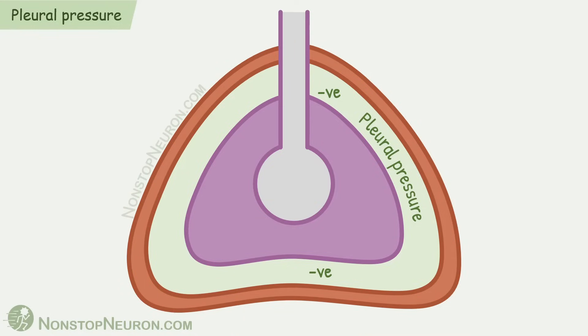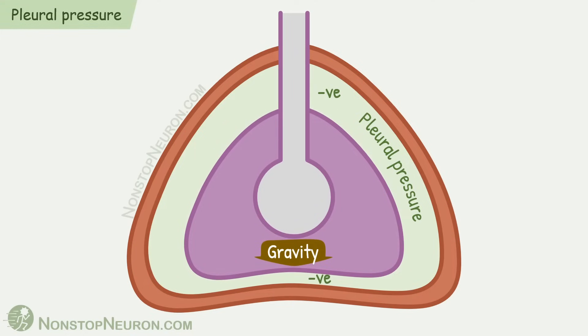Let's add a bit more detail here. Gravity pulls the lungs downwards. As lungs are pulled away from the apex, the vacuum over there increases. And due to pushing of lungs on the base, the vacuum over here decreases. Because of this, intrapleural pressure is more negative near the apex and less negative near the base.